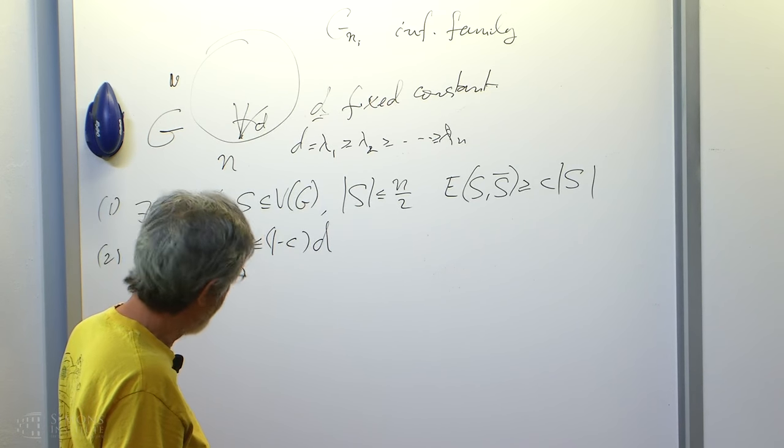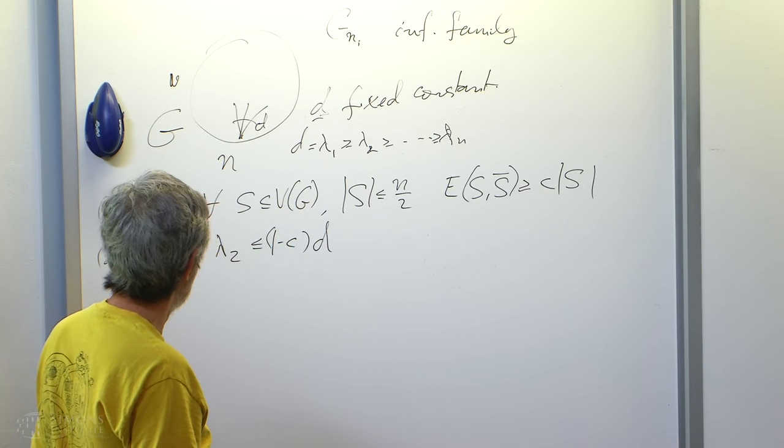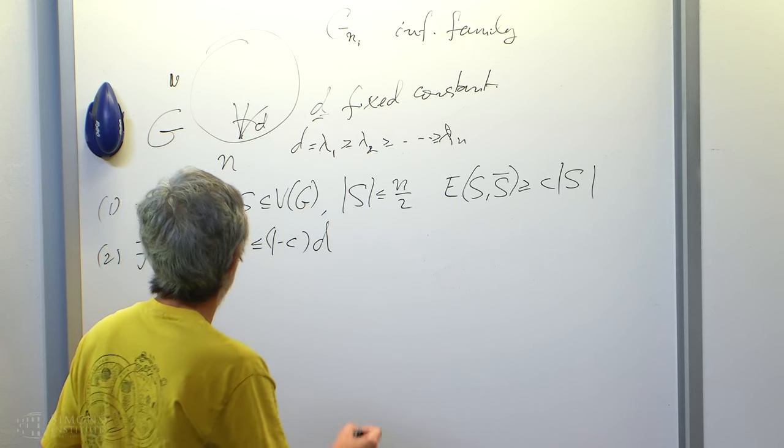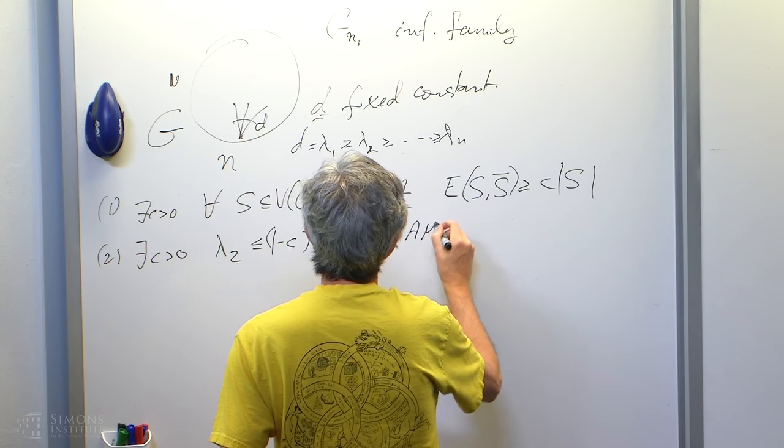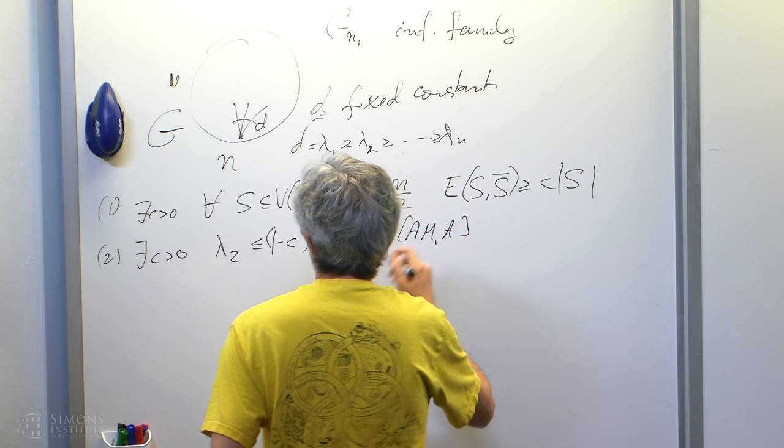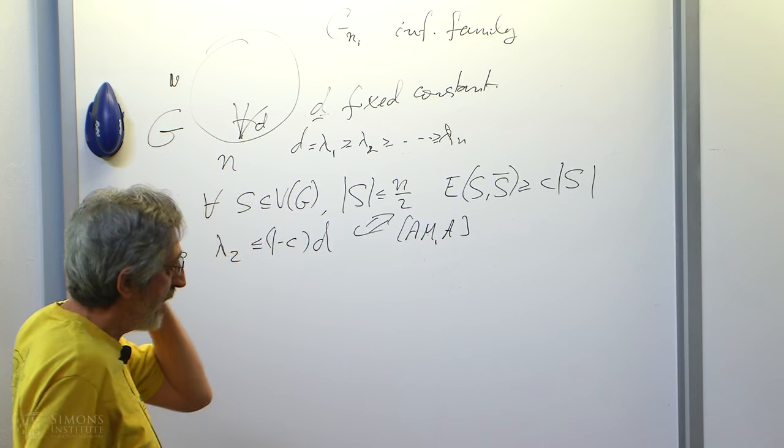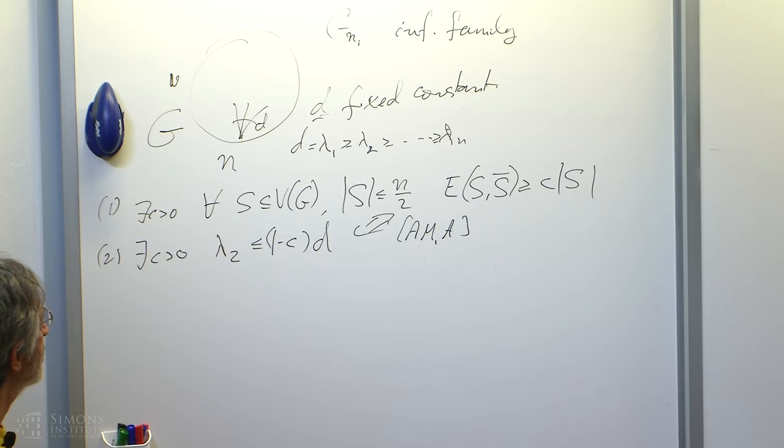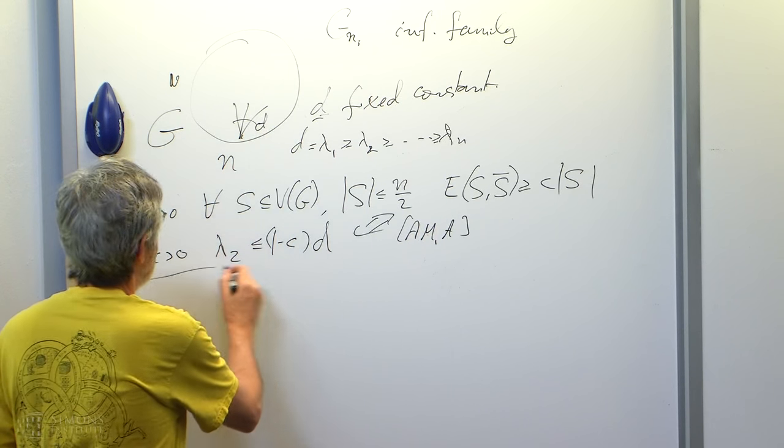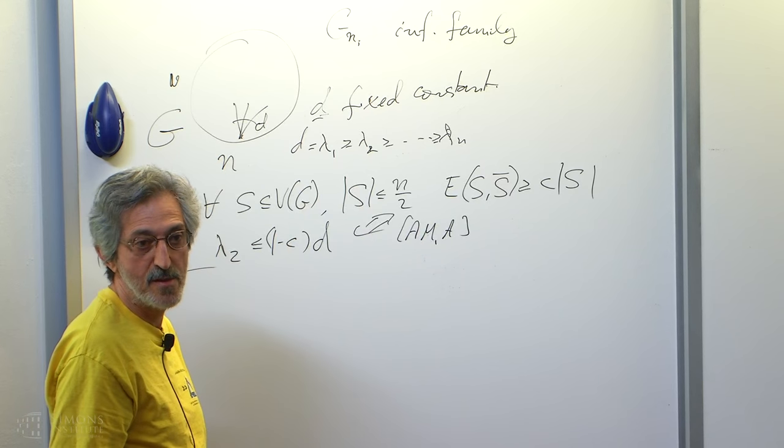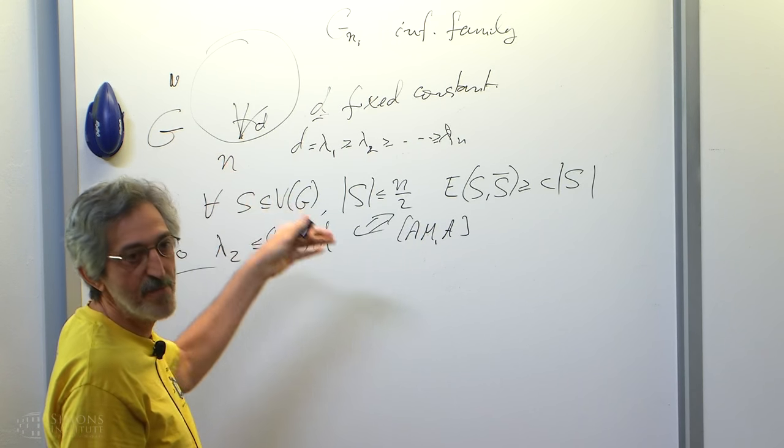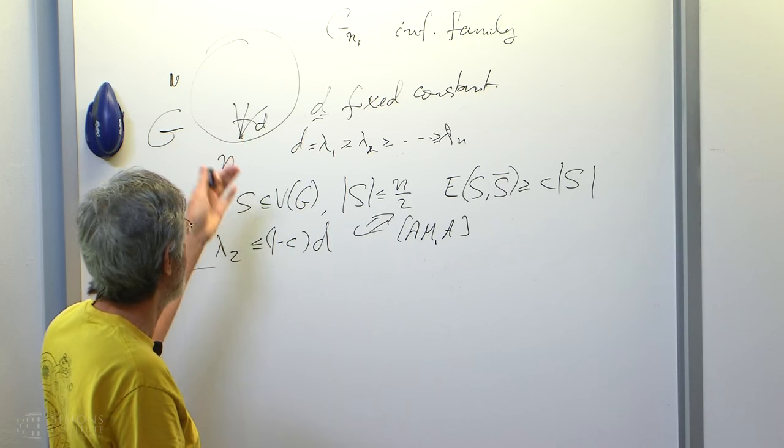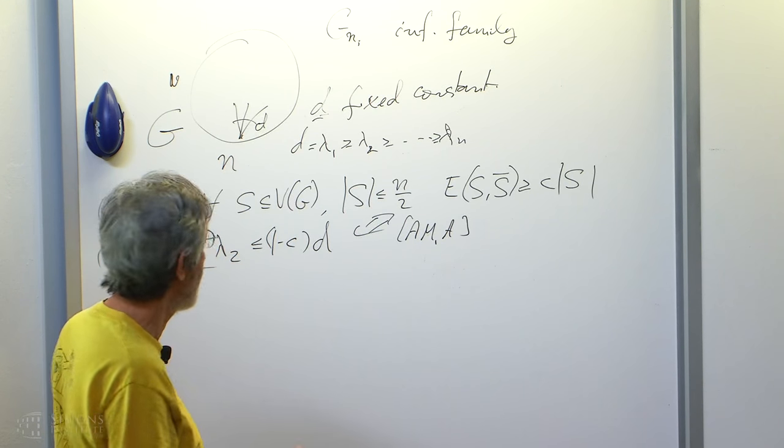This is the discrete version of Cheeger inequality, which is due to Alon-Milman and Alon. So they are equivalent. And maybe we'll see later some more equivalent conditions. What do we want with these expanders? Please stop and ask questions. Not open. Yeah, you can think of them as regular, but I'll cheat. Sometimes it will be just an upper bound. Sometimes there will be multiple edges.